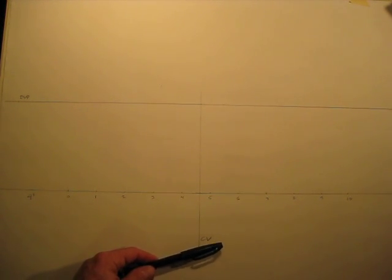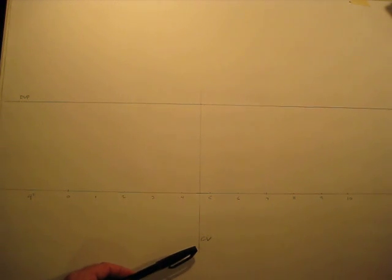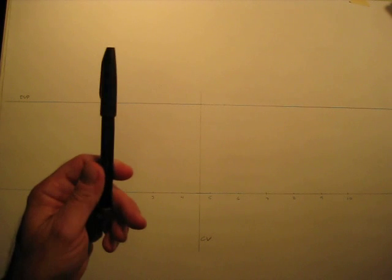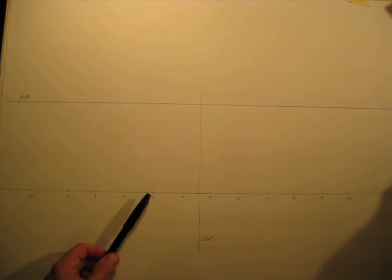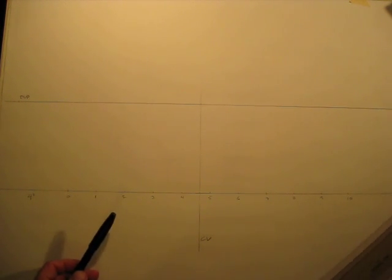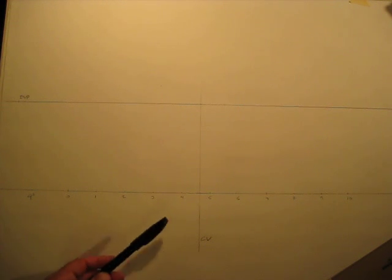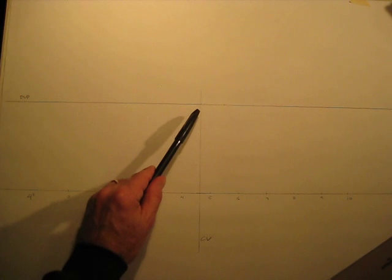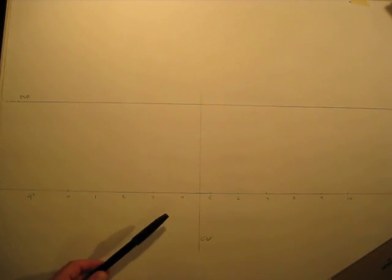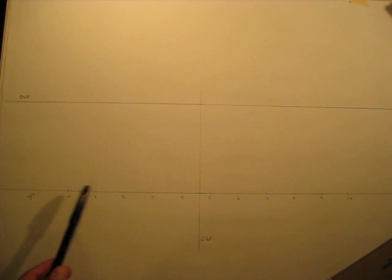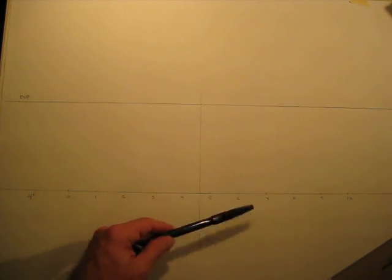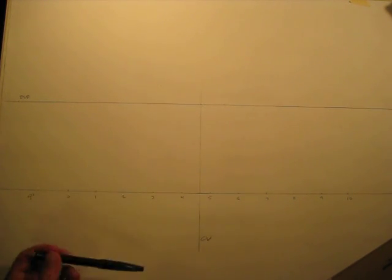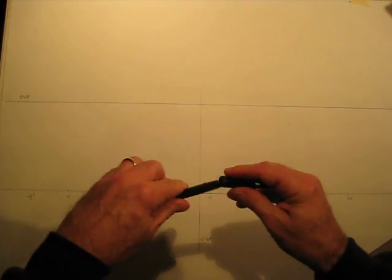So now I'm ready to go ahead and draw. These basic preliminary lines I did in pencil, but now I'm going to use a marker just so you can see it. So the first thing you do is, it's going to be a one-point perspective grid, floor grid. So we have our vanishing point right here. And I'm going to draw the orthogonal lines from each increment on the ground line, which is a measuring line, to the vanishing point.